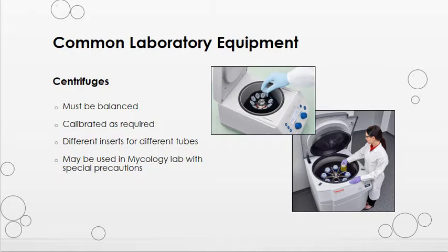Common lab equipment found in almost every department in the lab includes centrifuges, refrigerators and freezers, microscopes, biosafety cabinets or fume hoods, and so on. Centrifuges can be small, large, or any size in between. They must be balanced when in use, and they are calibrated and cleaned regularly. Some centrifuges have different inserts that can be changed depending on the tube type being used. Centrifuges are used in most departments in the lab, and they can also be used in mycology as long as special aerosol precautions are taken.